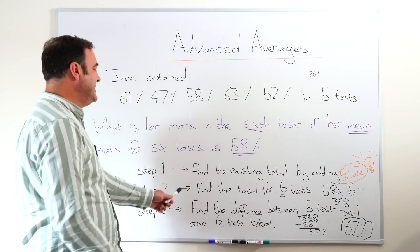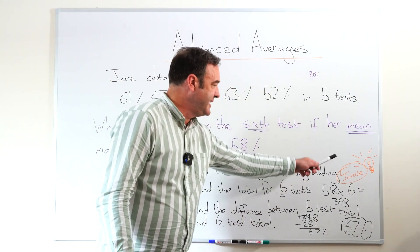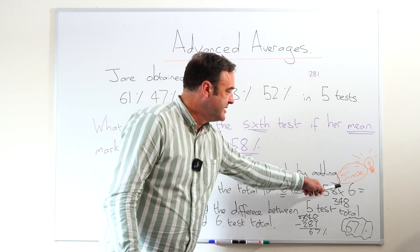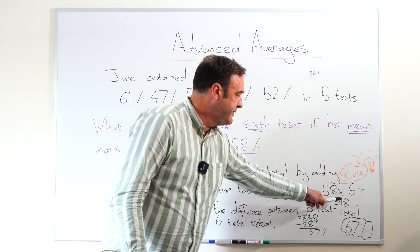Step two, find the total for six tests. So the inverse I've just spoken about, 58 times 6 is 348.